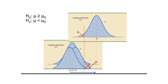Notice the closer the alternative true population mean — mu a, mu b, or mu c — is to the hypothesized population mean mu0, the larger is beta. In other words, when the true population mean is close to mu0, the probability of making a type 2 error is high. Conversely, as the alternative true population mean decreases to values farther below mu0, the probability of making a type 2 error diminishes. When the true population mean is far below mu0, the probability of making a type 2 error is low.